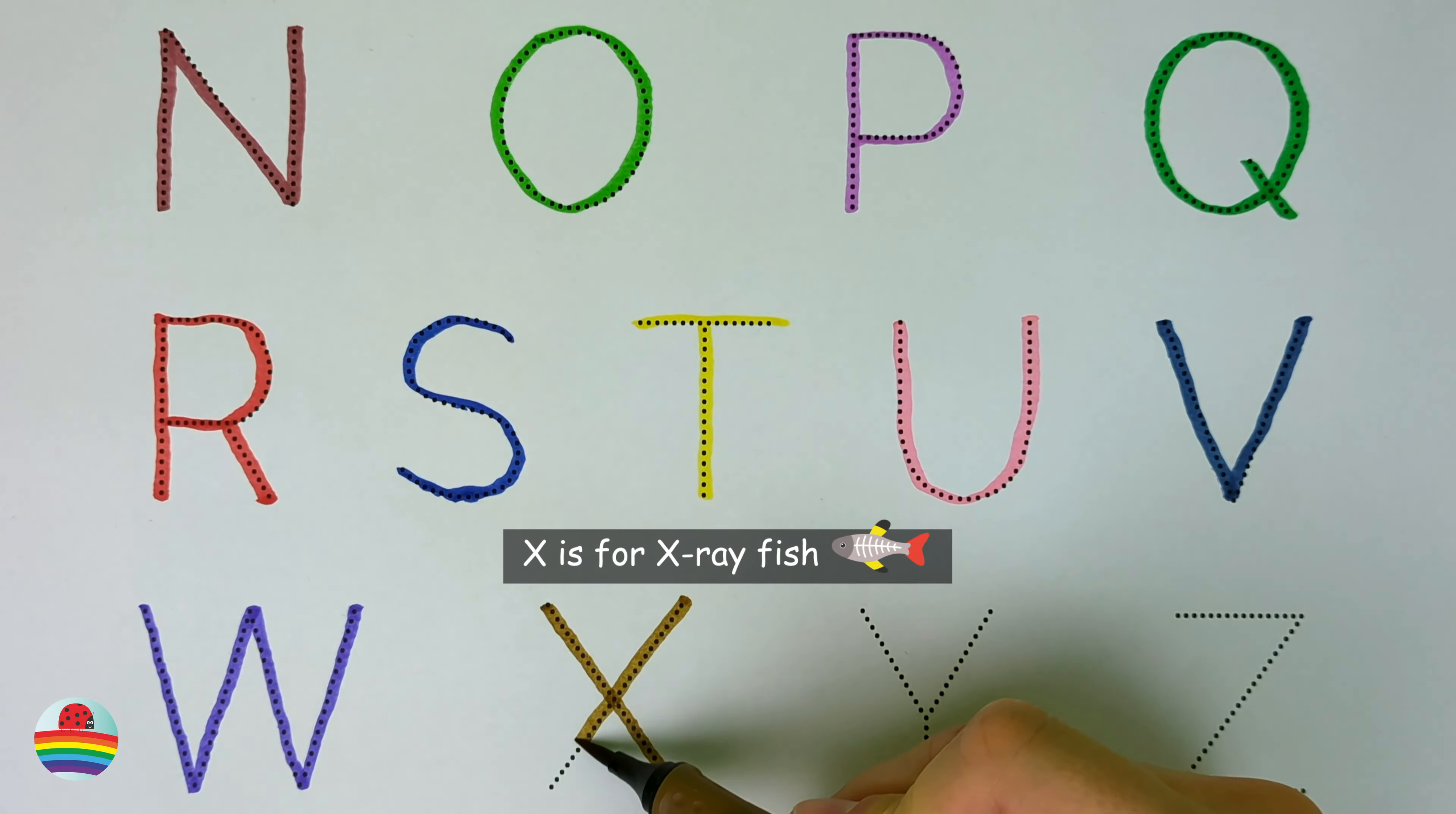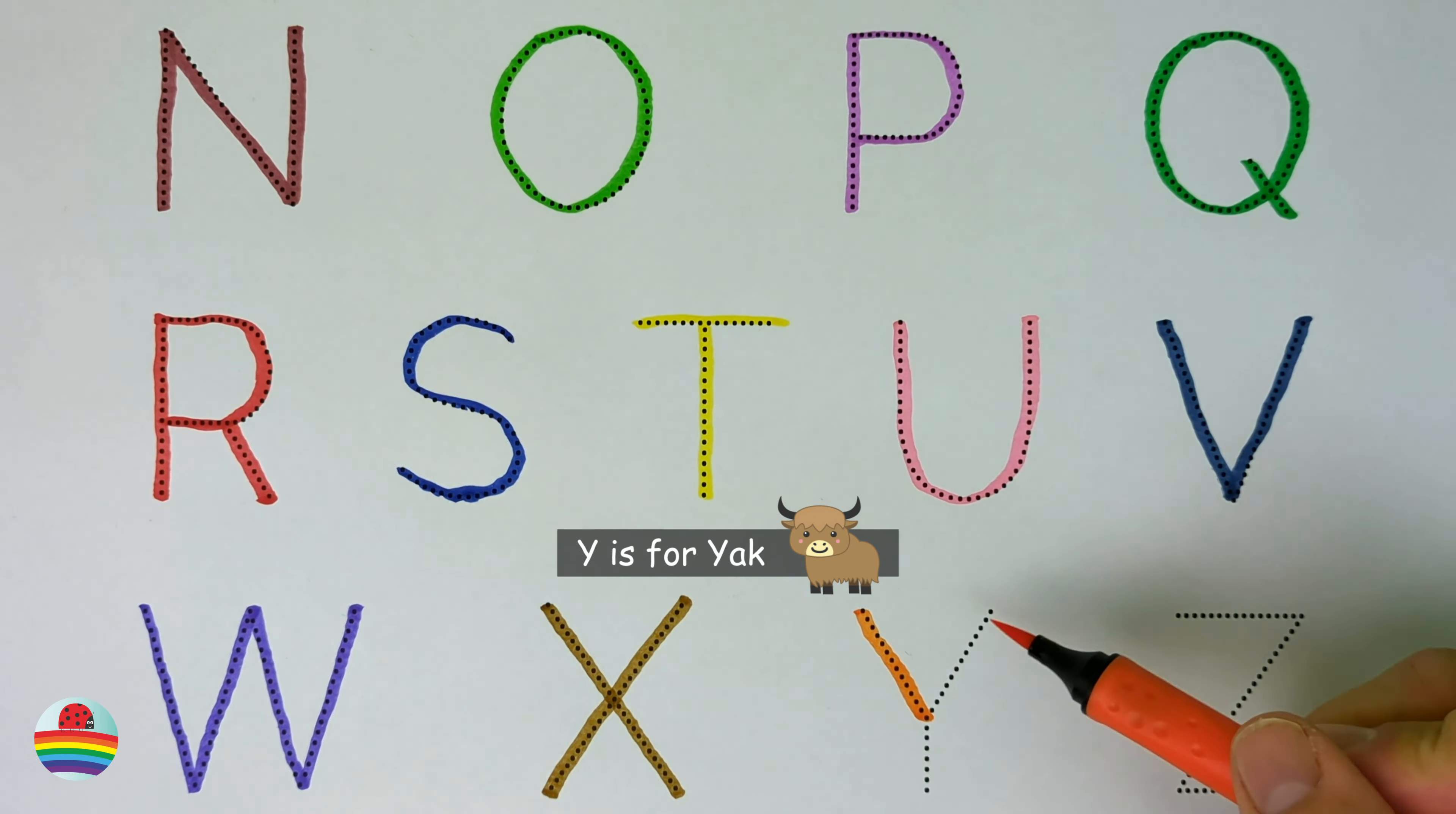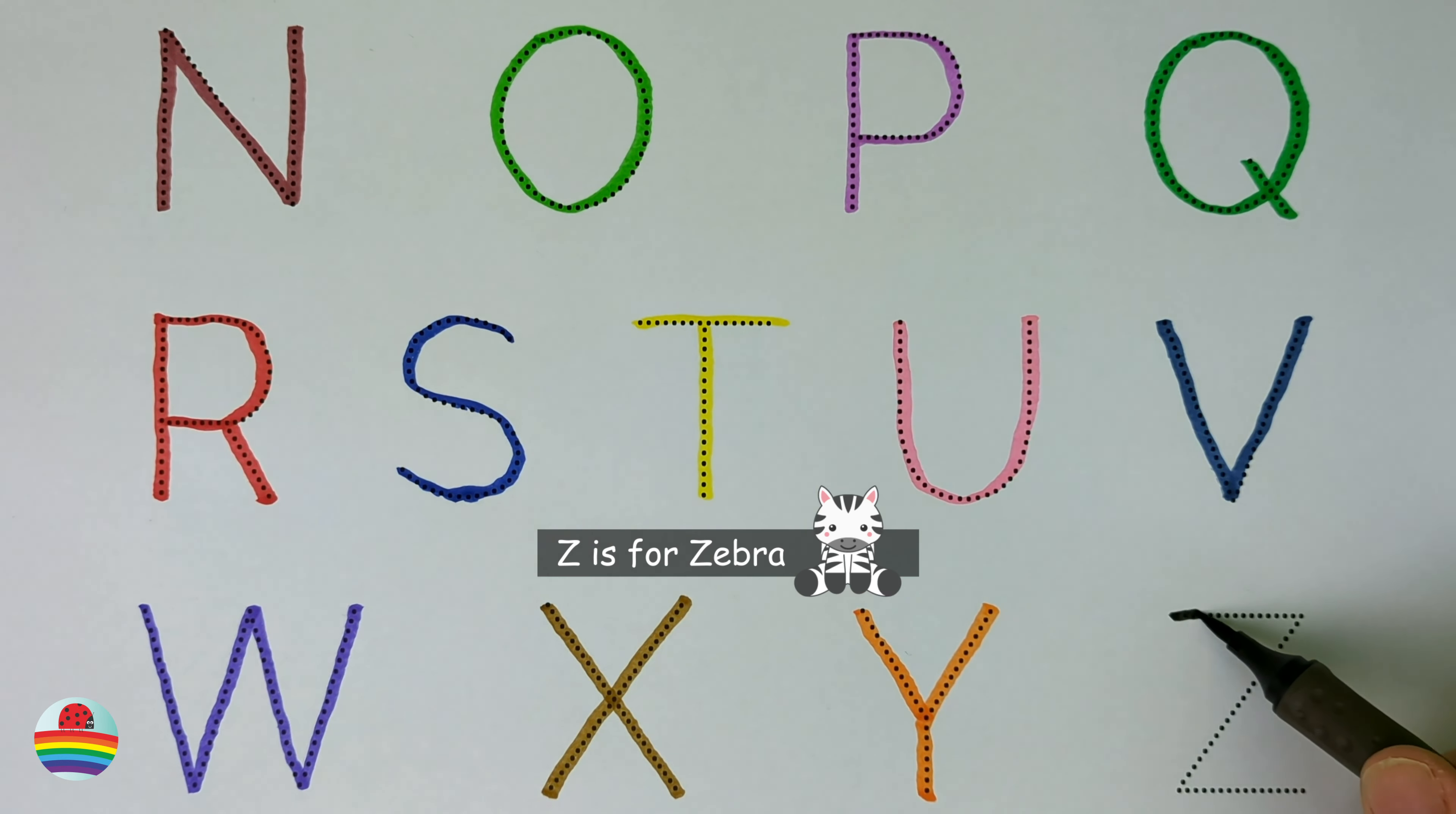X. X is for x-ray fish. X. Y. Y is for yak. Y. Z. Z is for zebra.